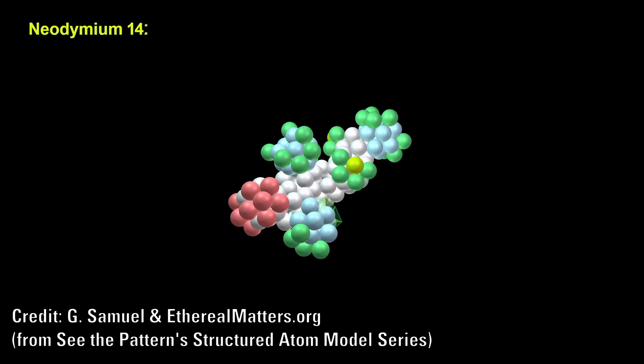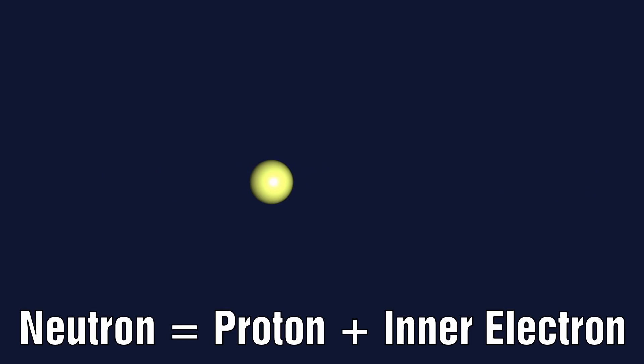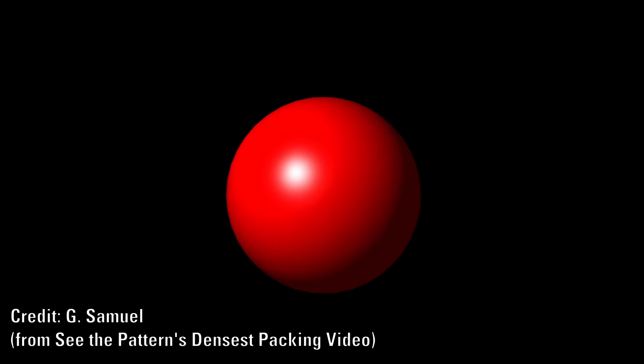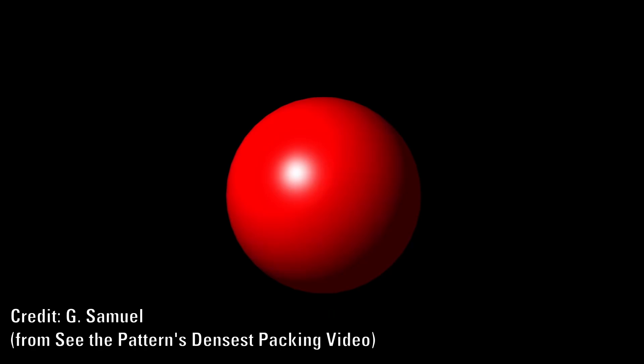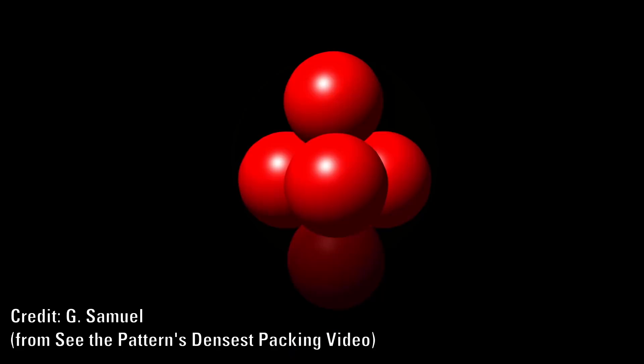Instead there are no neutrons and there is no strong nuclear force. Protons are held in the nucleus by electrons. An electron and a proton pair is what we see as a neutron. If we add into this the idea of platonic solids and use a simple densest packing rule we can now create complex atomic nuclei following a very simple set of rules.